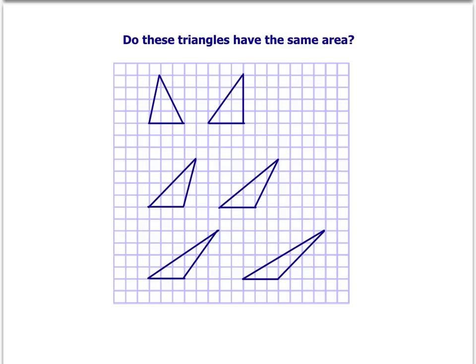So it turns out that each of these triangles has the same area. And the reason that's true is they all have the same base length: three units, three, three units, three, three, and three.